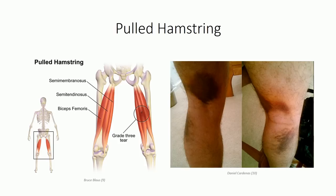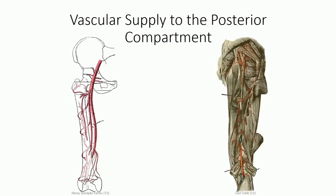Mild to moderate hamstring tears are generally treated with a PRICE approach, and the athlete may return to play within two weeks of the injury. We've already discussed the vascular supply to the posterior compartment from the previous lesson. Recall the perforating branches off the deep femoral artery that pierce through the adductor magnus to reach and supply the posterior compartment.